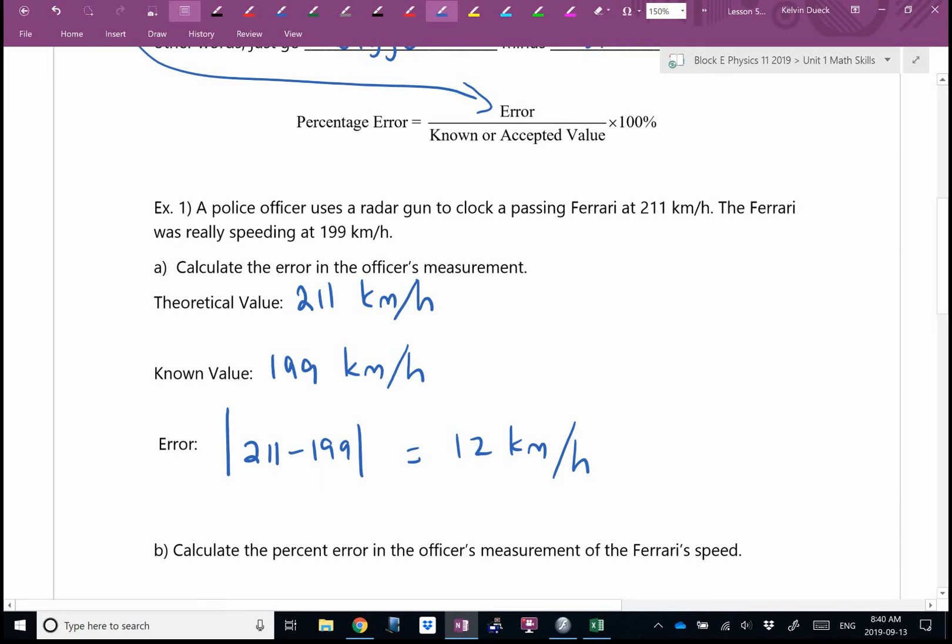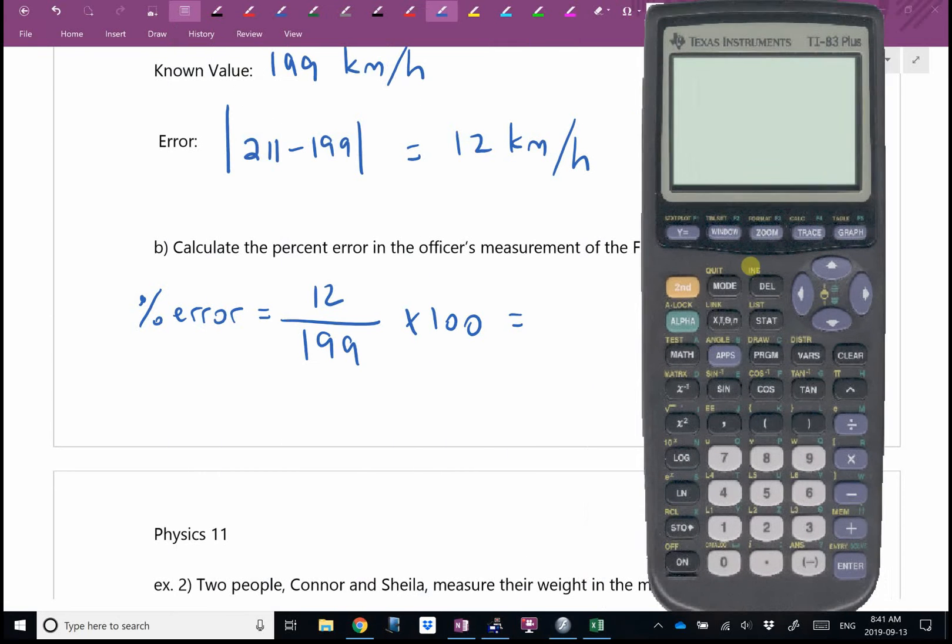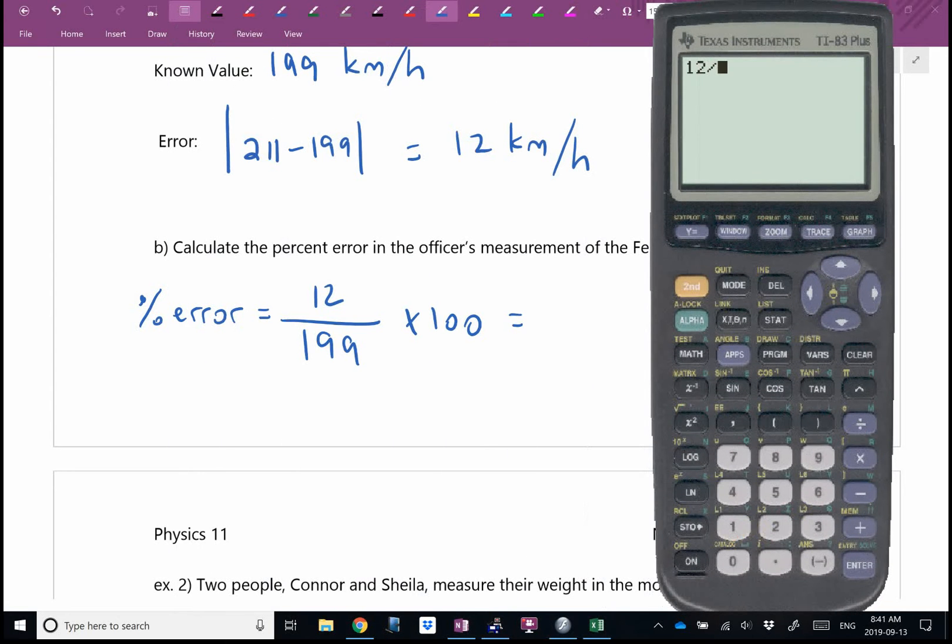So this radar gun for this measurement is off by 12 kilometers per hour. That doesn't mean that it's always off by 12 kilometers per hour. It might mean that it'll depend on how fast you're going. We would love to convert this into a percentage. So to convert this into a percentage, percent error, that's going to be that 12 divided by the value that I know is correct. Which value do I know is correct? And then times 100 to make it a percent. This radar gun is off by six percent.